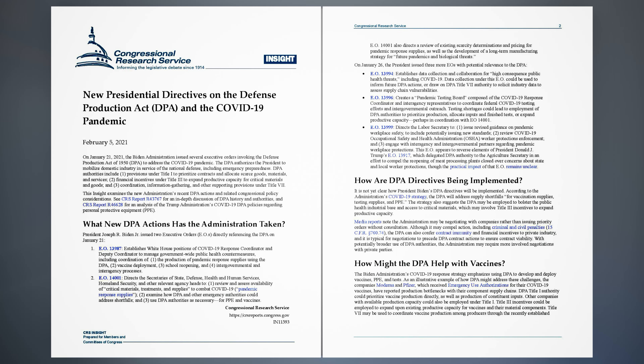New presidential directives on the Defense Production Act (DPA) and the COVID-19 pandemic. Updated February 5, 2021. On January 21, 2021, the Biden administration issued several executive orders invoking the Defense Production Act of 1950 (DPA) to address the COVID-19 pandemic. The DPA authorizes the president to mobilize domestic industry in service of the national defense, including emergency preparedness.